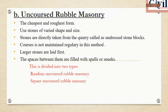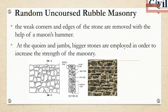In random uncoursed rubble masonry, we use directly undressed stones. Foliated or degraded portions are removed using a mason's hammer. According to sizes, large stones are placed in large positions to increase structure and strength. We construct the bedding plane as the structure of the masonry.